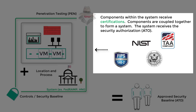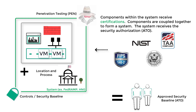Individual components are put together to make up the system, and that's what gets the ATO. You cannot — or typically would not — go from a certified server directly to ATO. You would have to have additional variables on top of just that certification for that single server. For example, you would have to take into account the network, the firewall, the personnel around it, and the process used to manage it.